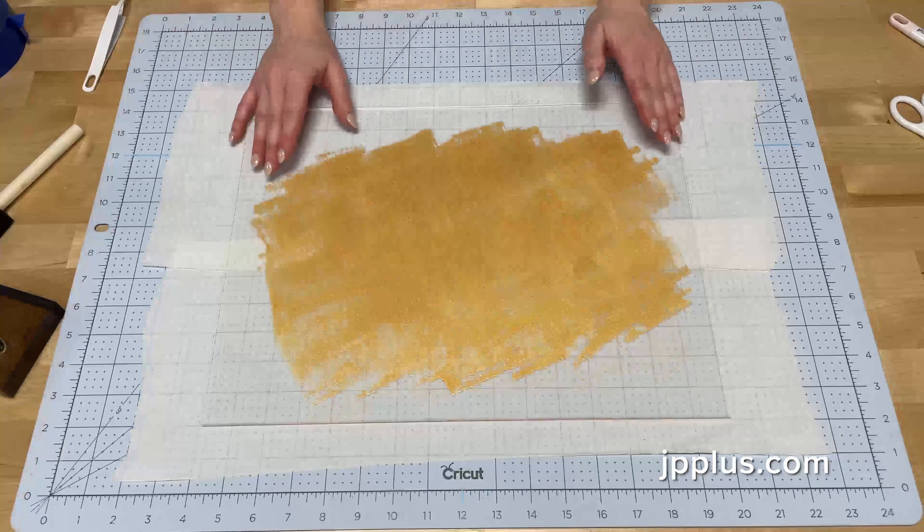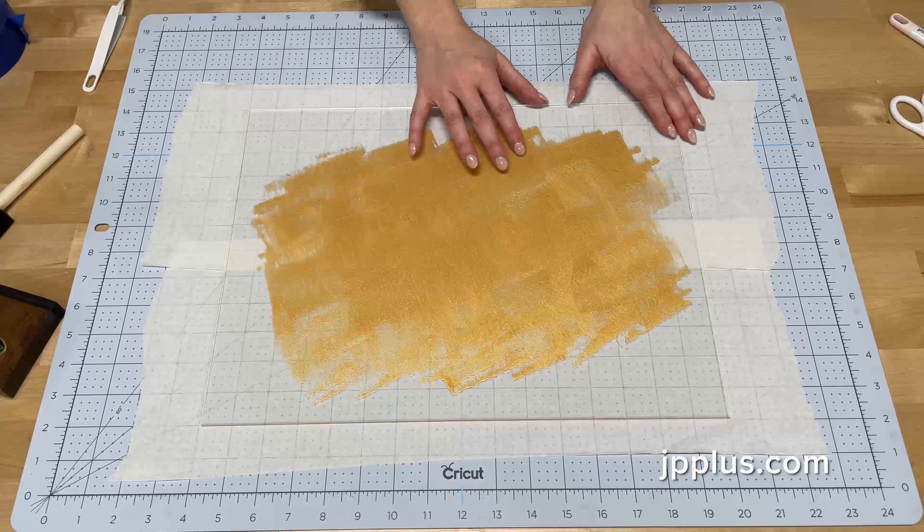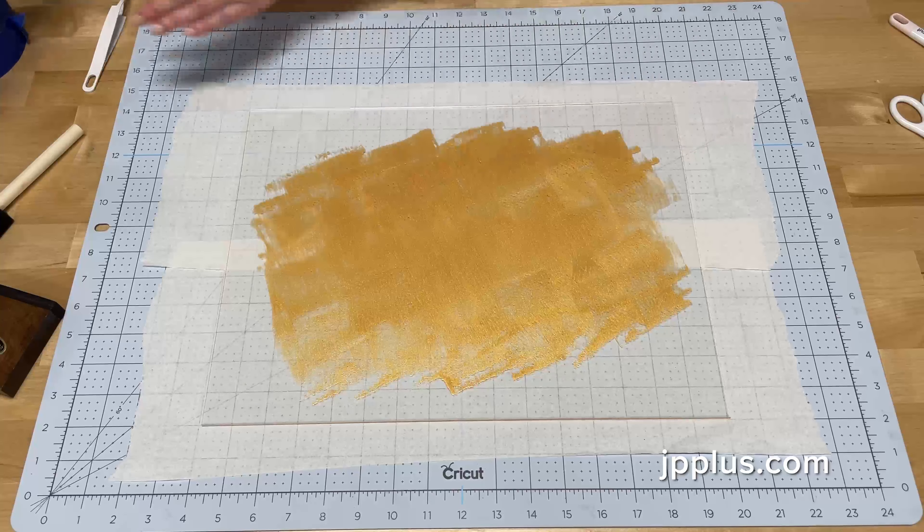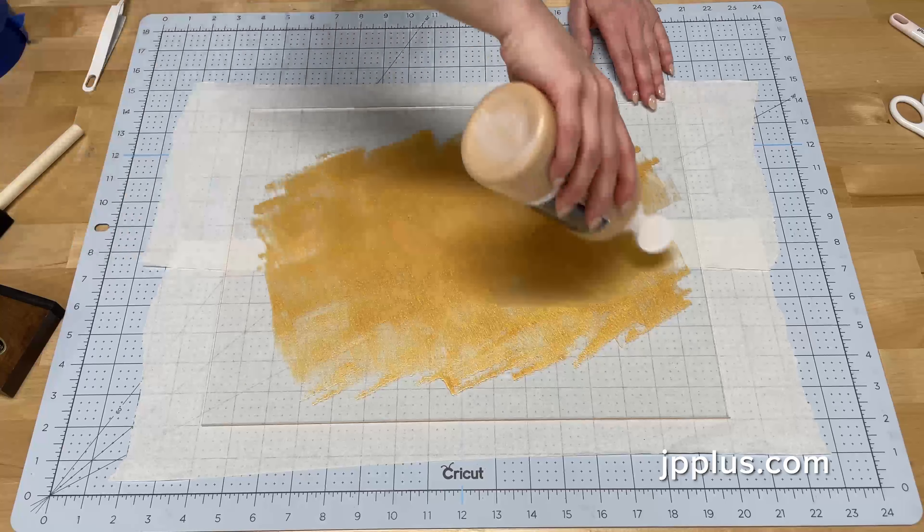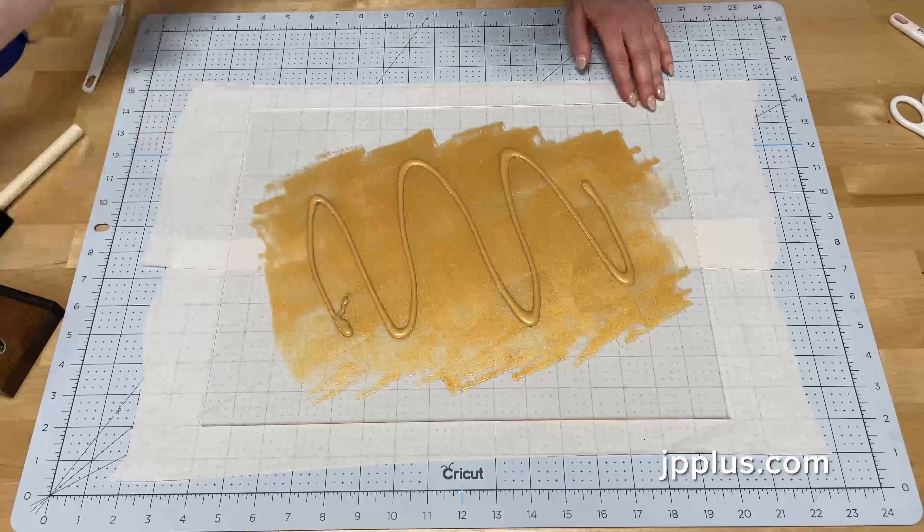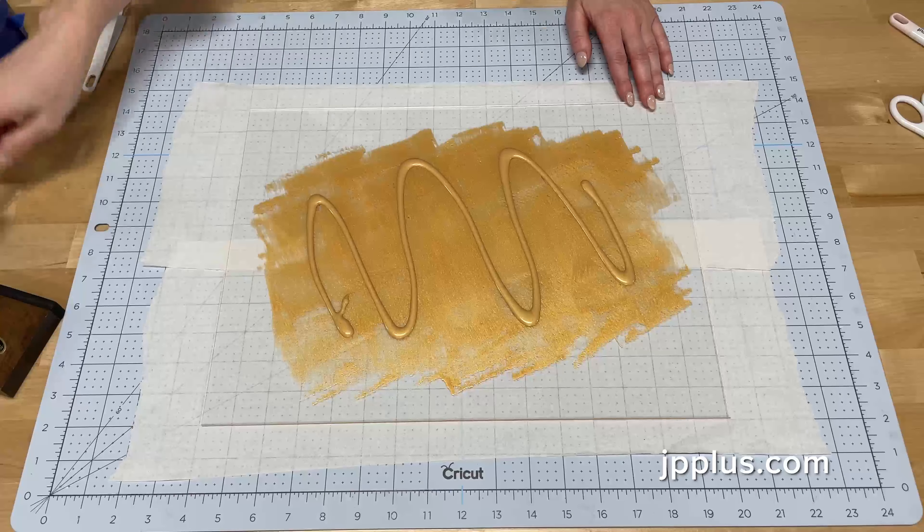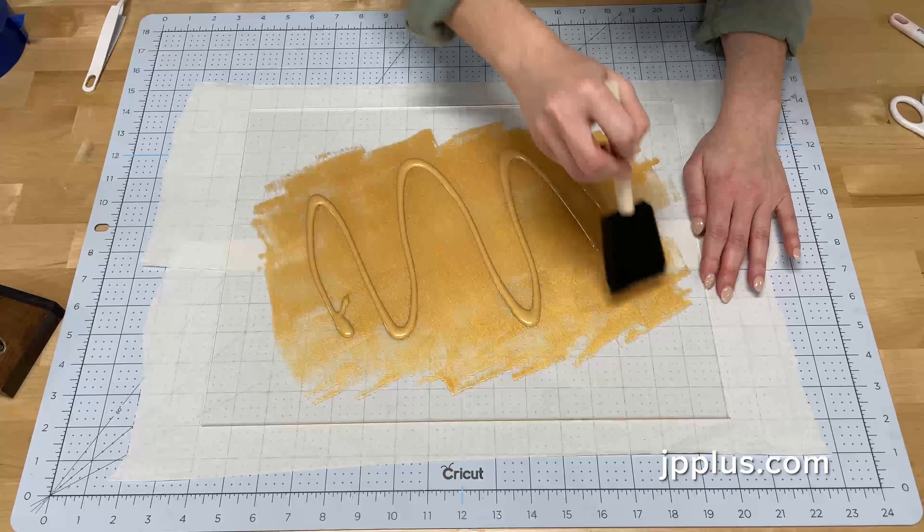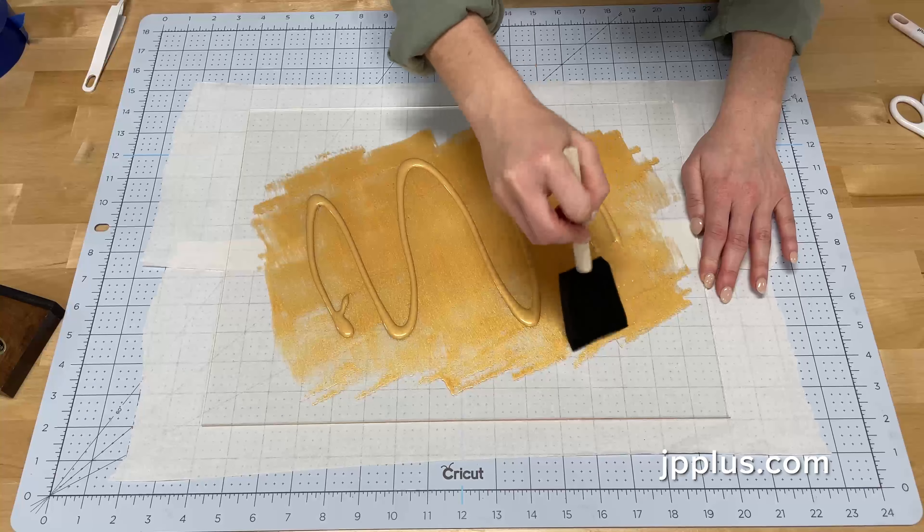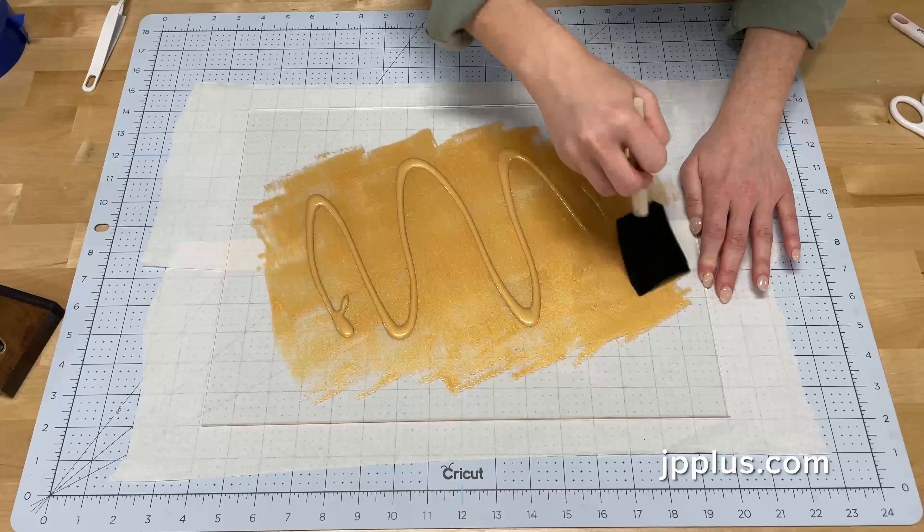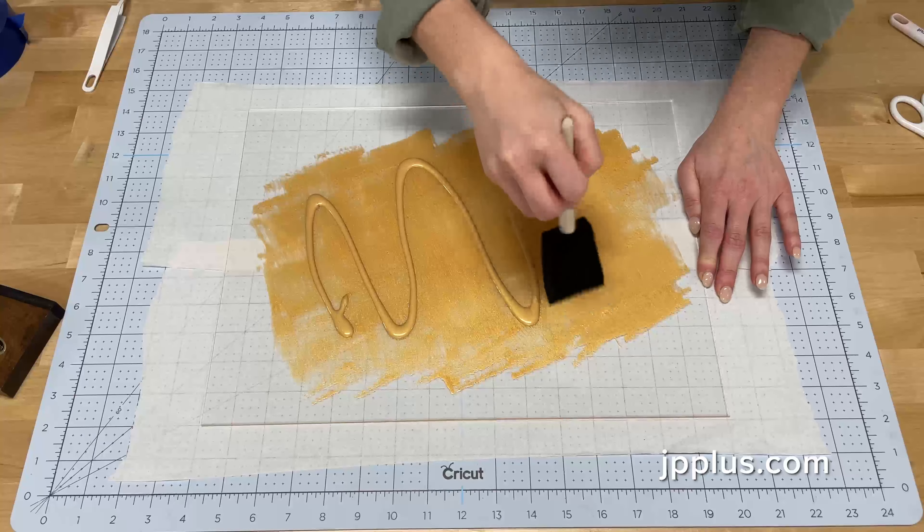So our first coat is dry and we're ready to go ahead and apply our second coat. I'm going to do the same thing, just squirt some paint onto the acrylic and use my foam brush and fill in where I think that it needs more paint to make it more solid instead of opaque.